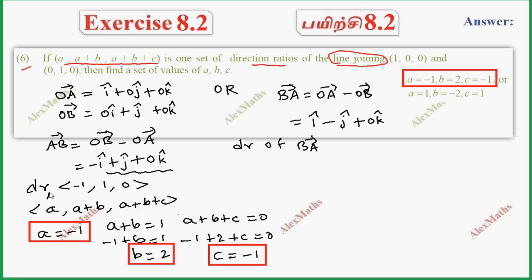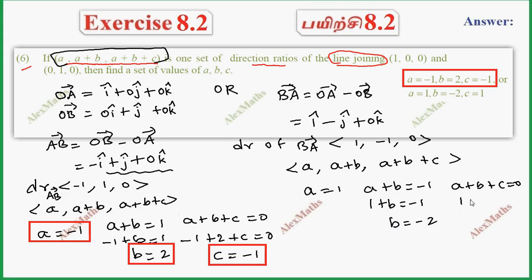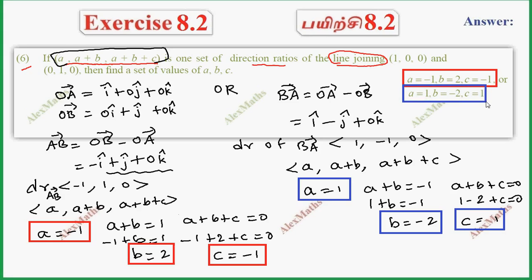Comparing the direction ratios of AB vector with a, a plus b, a plus b plus c: equating first values, a equals 1. Then a plus b equals minus 1, so with a equal to 1, b equals minus 2. And a plus b plus c equals 0, so c equals 1. We have two answers.